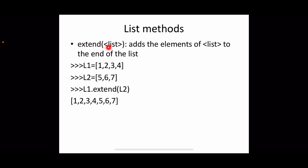The extend method takes another list as argument and appends its items to the end of the original list. For example, l1 = [1, 2, 3, 4] and l2 = [5, 6, 7]; calling l1.extend(l2) appends the items 5, 6, 7 to the end of l1, giving the new list [1, 2, 3, 4, 5, 6, 7].